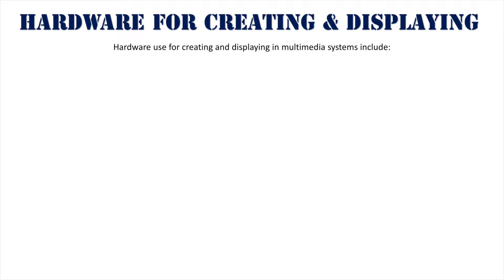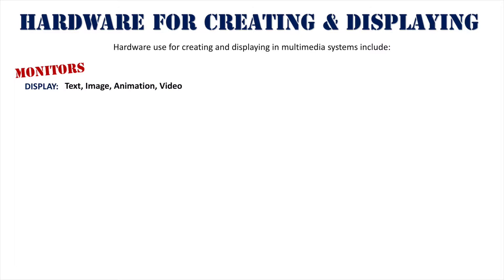We're looking at hardware for creating and displaying in multimedia systems. Firstly, we'll take a look at monitors. Monitors are obviously a display device for information processing and they display text, image, animation, and video. We have three classifications in the IPT course of monitors, but it has gotten a bit more dynamic lately with LED elements and retina displays.